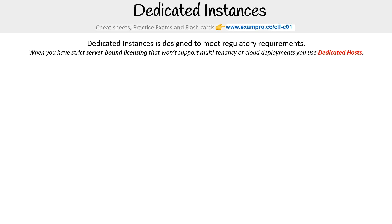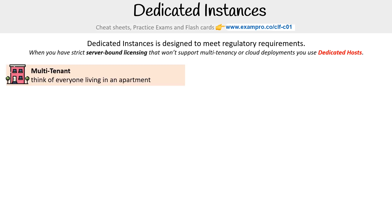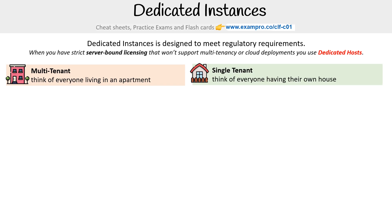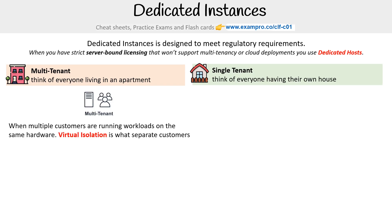To understand dedicated instances or hosts, we need to understand the difference between multi-tenancy and single-tenancy. Multi-tenancy you can think of like everyone living in the same apartment, and single-tenancy is like everyone having their own house. You have a server with multiple customers running workloads on the same hardware, and they are separated via virtual isolation — using the same server but with software separating them.